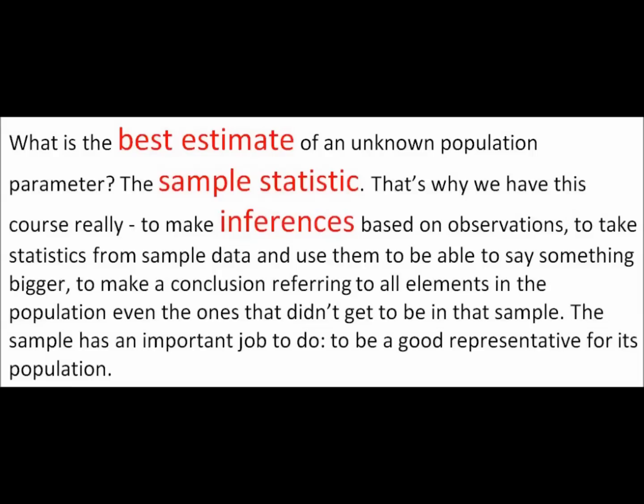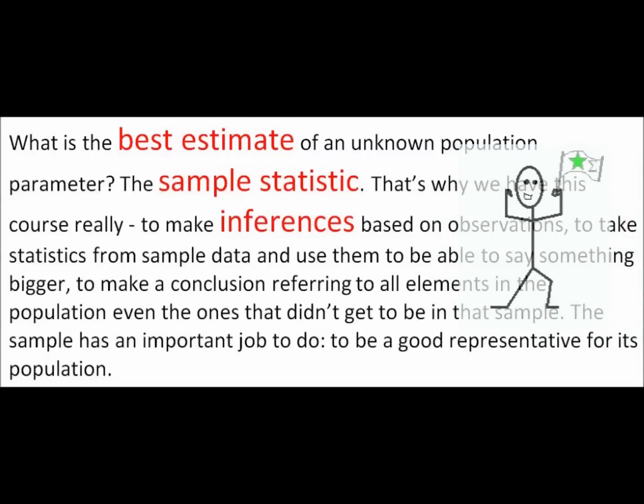We make inferences based on observations — we take statistics or sample data and use them to make conclusions referring to all elements in the population, even the ones that didn't get to be in the sample. The sample has that important job to do: to be a good representative for its population.